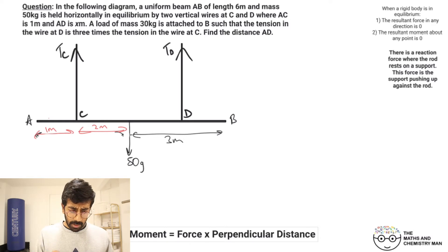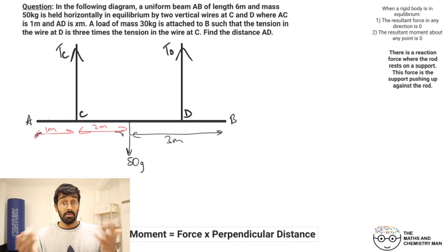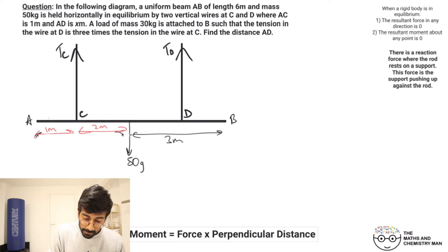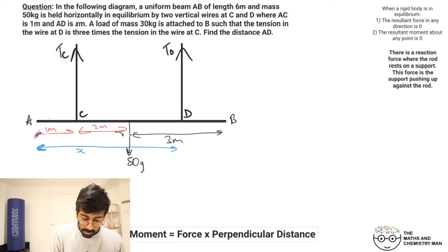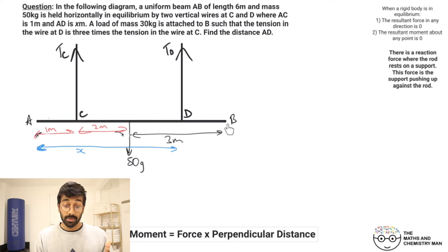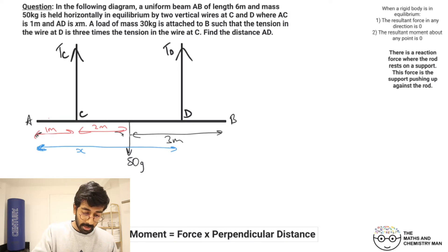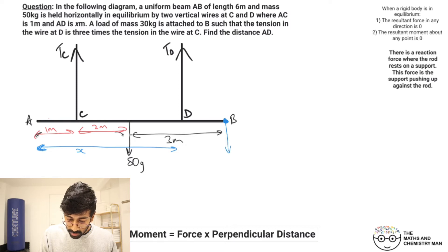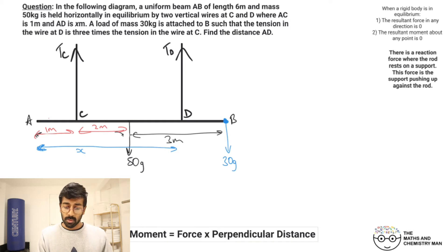The distance A to D is x — they haven't given us that, so we'll label it as x. We're also told a load of mass 30 kilograms is attached to B, so at the end we've got 30g coming down.